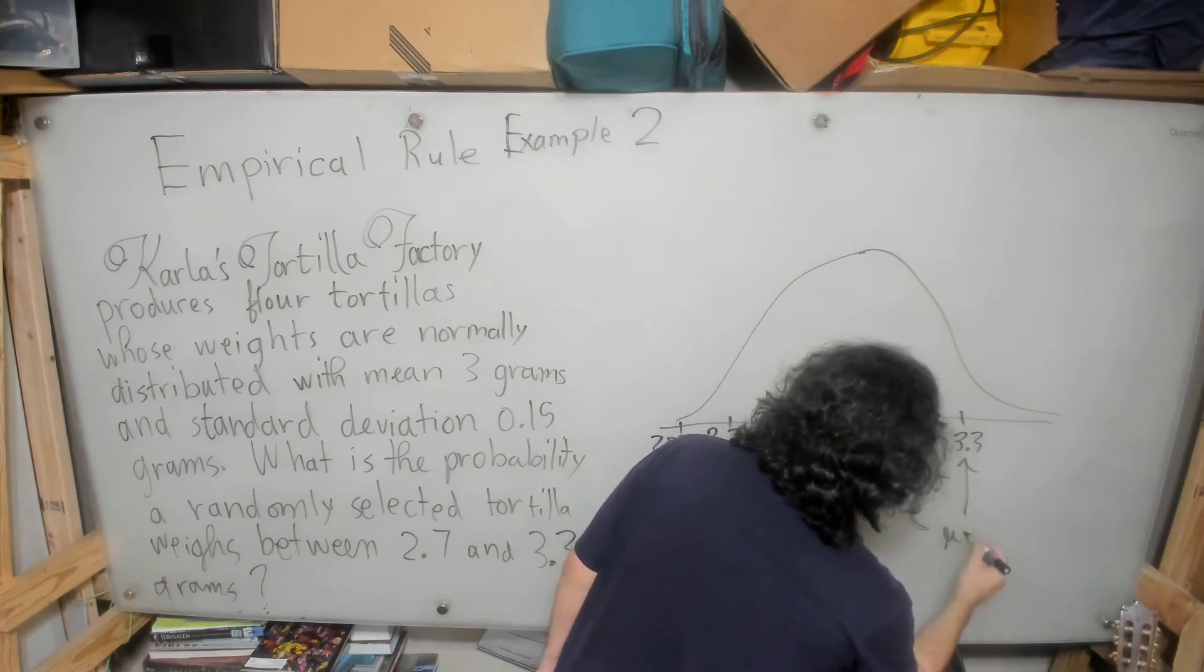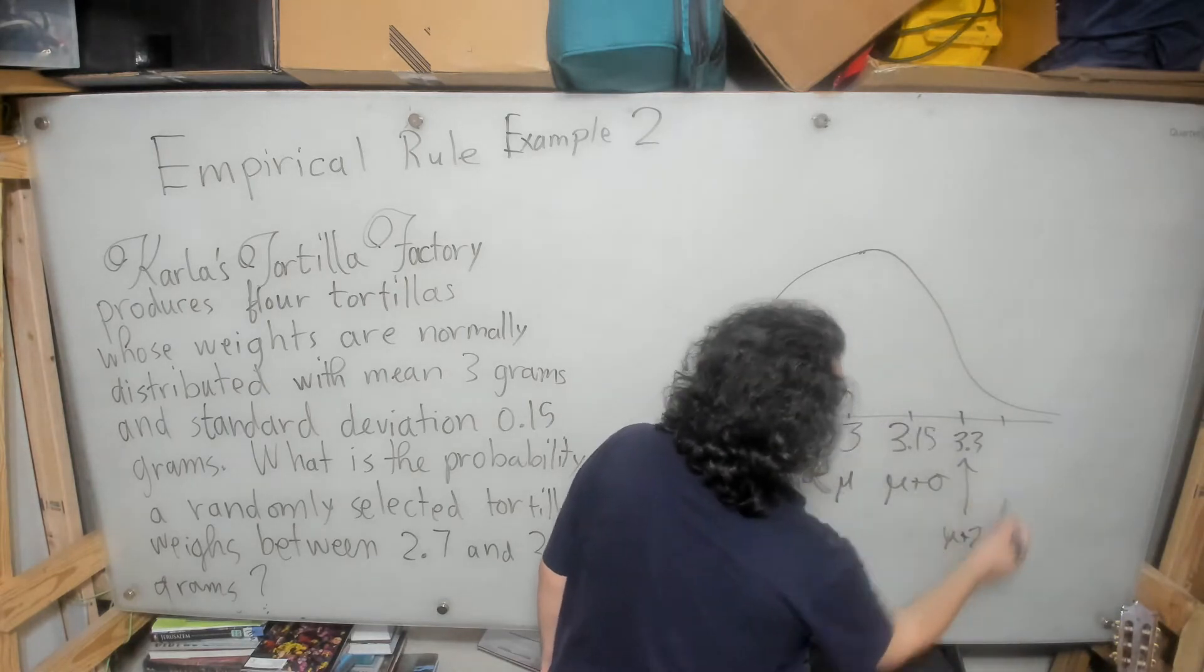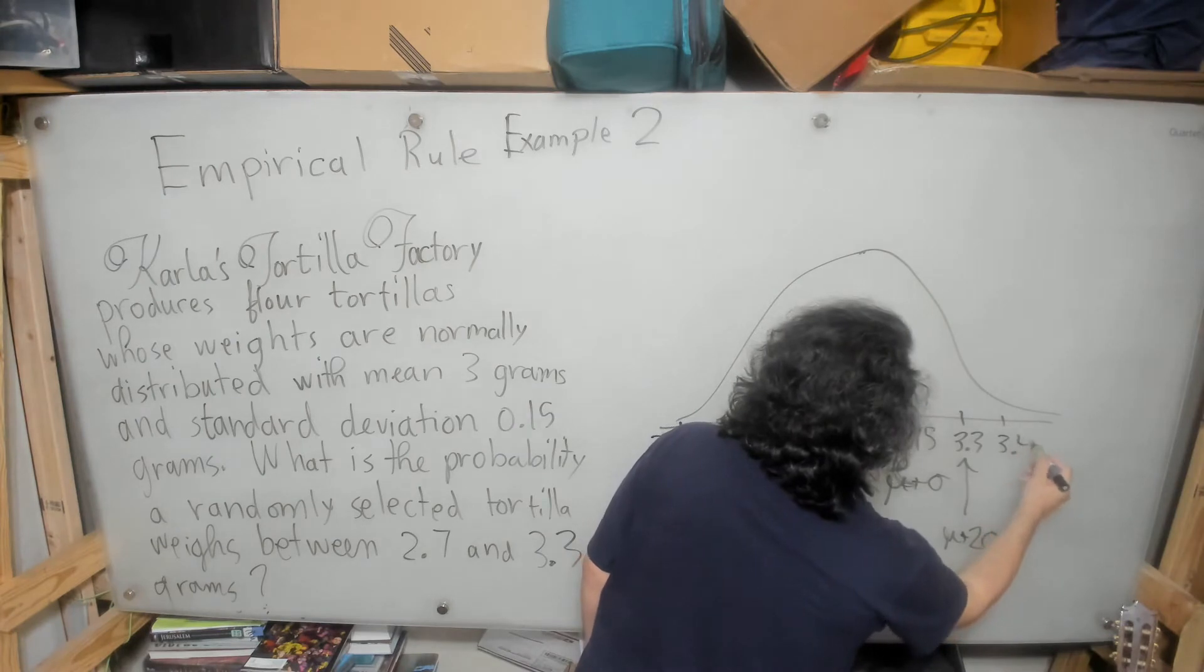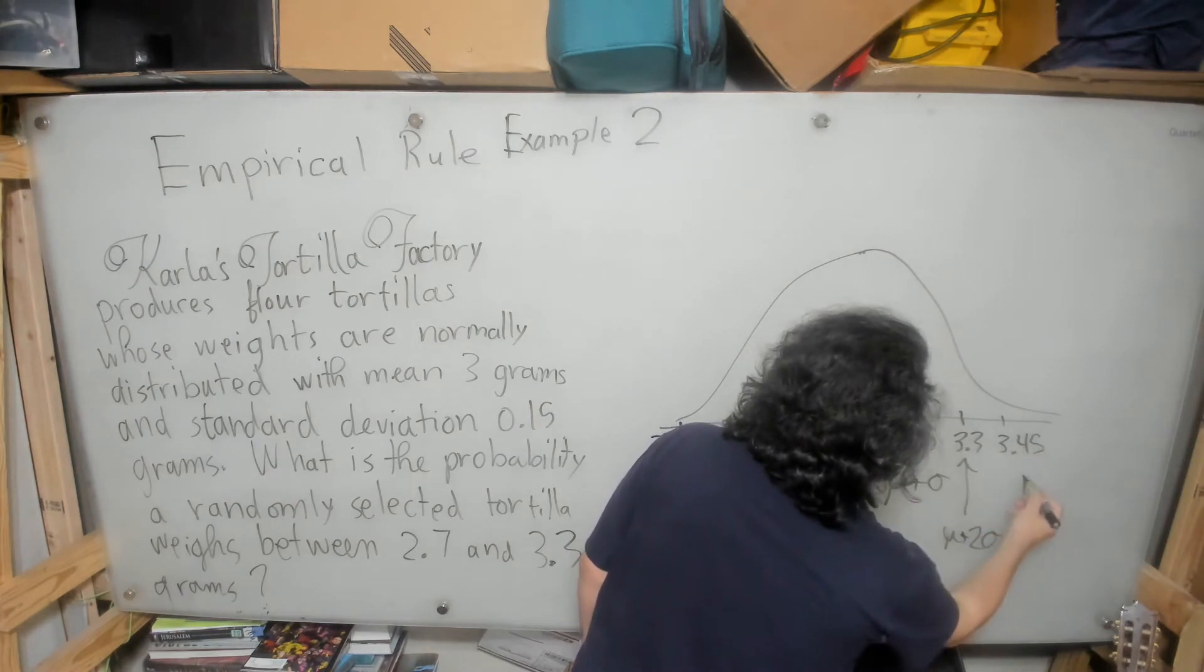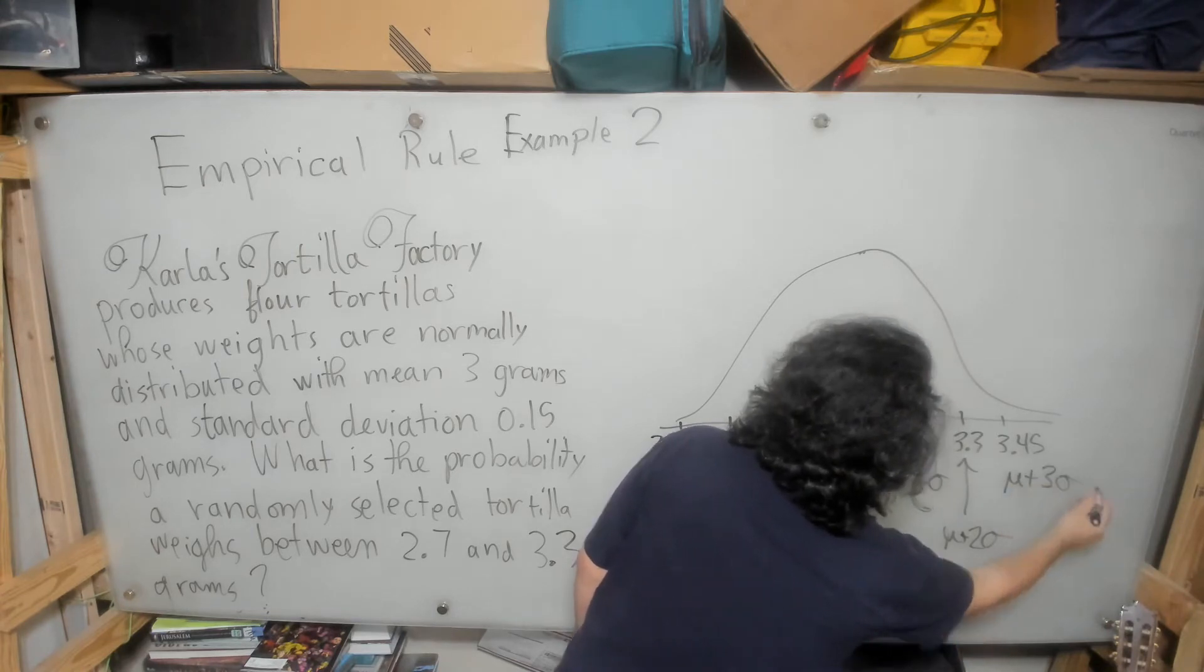And finally, if I add 0.15 again, I will get 3.45. And that corresponds, of course, to the mean plus 3 standard deviations.